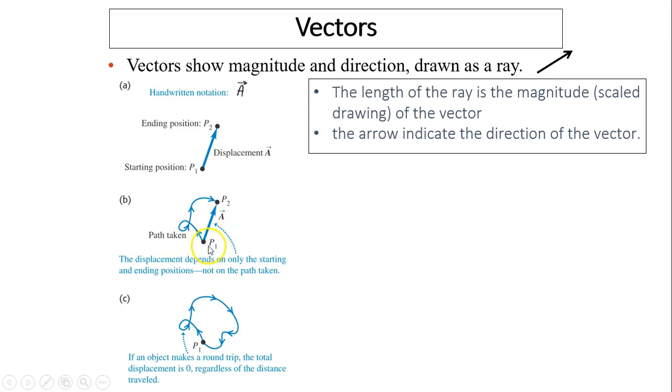Now there are many ways to go from point P1 to P2. For instance, you can take this little path on the side. The displacement depends only on the starting and ending positions. It does not depend on the path. As a matter of fact, this path can indicate distance traveled. And this direct distance, that is a displacement.